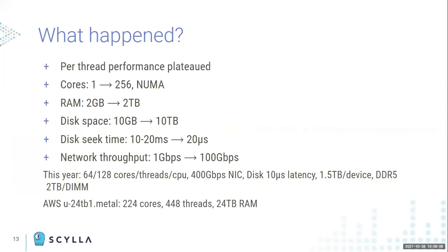To summarize what happened in the last 20 years: the number of cores grew from one to many, RAM became cheaper so servers have more and more of it, and SSDs — especially on the cloud — became very accessible with higher bandwidth and much lower latency. Most Scylla deployments use SSDs. There are machines out there with more than 200 cores, and the question is: which applications are built to handle this huge change in architecture?